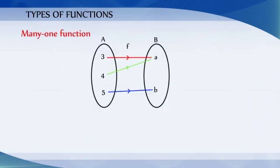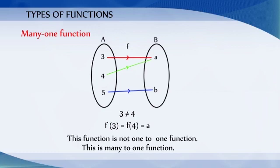In this example, the elements 3 and 4 of set A have the same image A in set B. Therefore, this function is not 1-to-1. This is a many-to-one function.